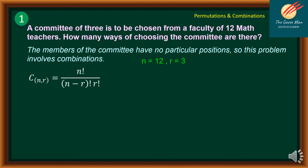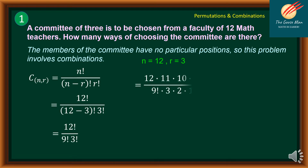Using the formula of combination: nCr is equal to n factorial all over n minus r factorial times r factorial. Substituting the values of n and r respectively, we have 12 factorial all over 12 minus 3 factorial times 3 factorial, or in simplest terms, 12 factorial divided by 9 factorial times 3 factorial. Expanding 12 factorial, we get 12 times 11 times 10 times 9 factorial, divided by 9 factorial times 3 times 2 times 1.